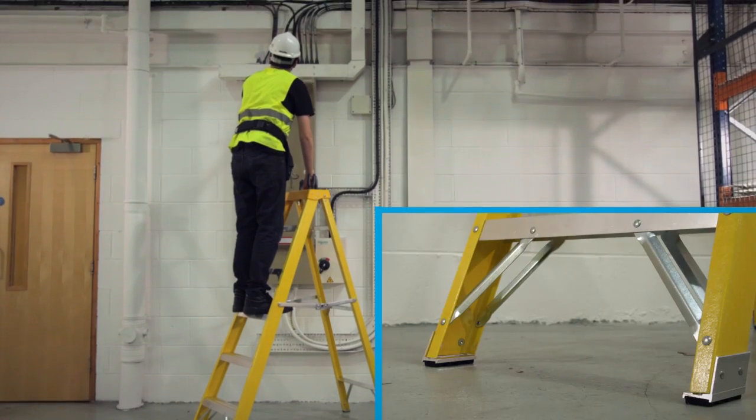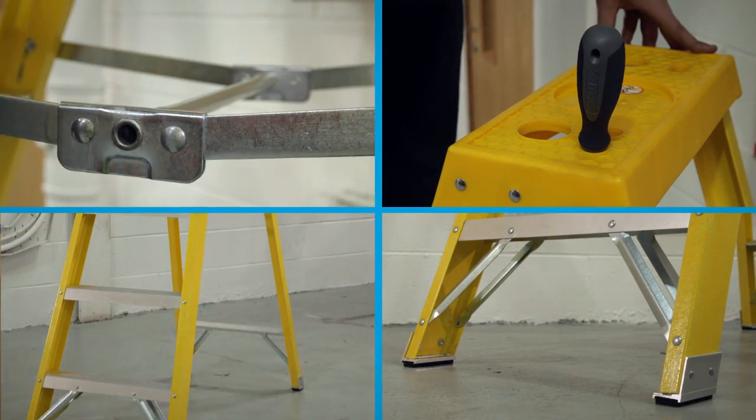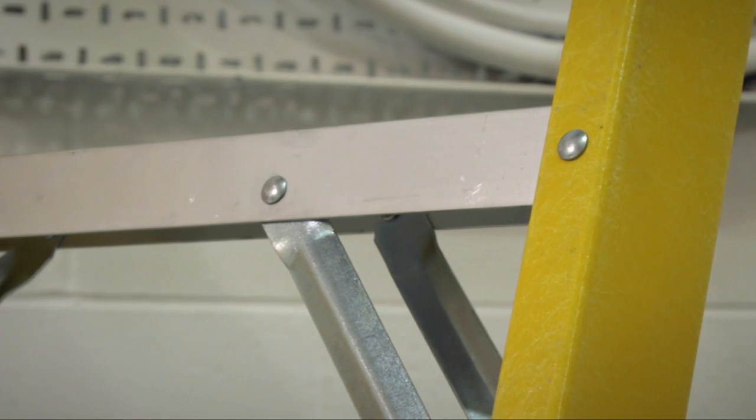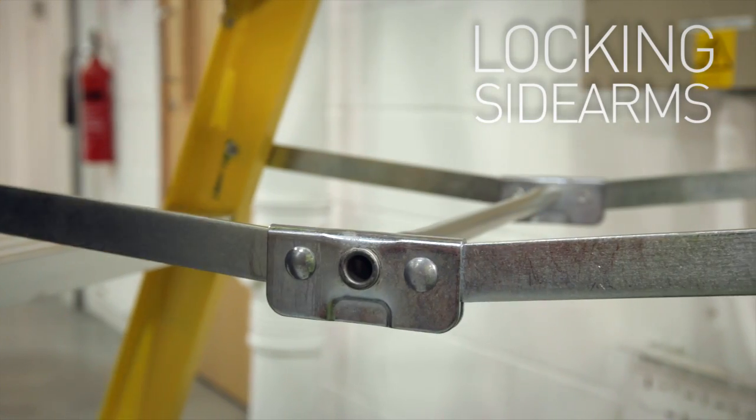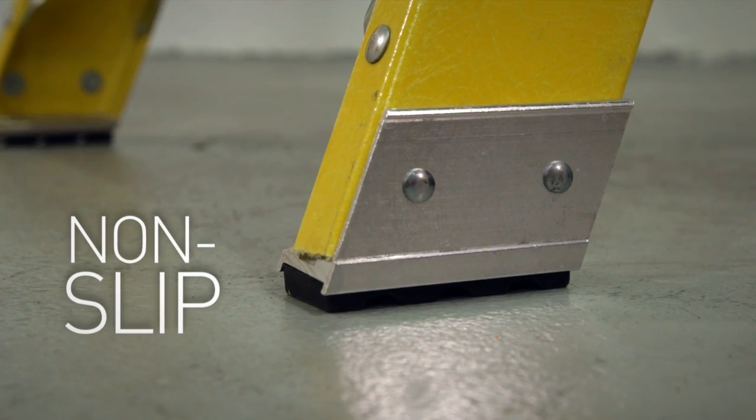The GRP Swingback Steps are built with all the strength and safety you'd expect from Zargus ladders, including double riveted aluminum treads, locking aluminum sidearms and riveted non-slip feet.